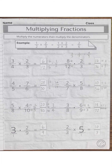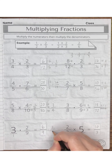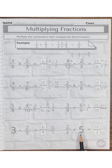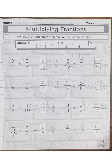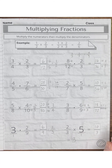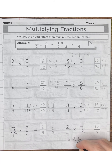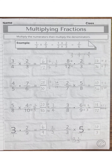Six-ninths reduces to two-thirds, as before. For our final one, we have an improper fraction. Improper fractions can be converted into a mixed number by dividing the numerator by the denominator. 3 can go into 10 three times; the remainder is 1, which becomes the numerator, and the denominator stays the same. For more information about converting improper fractions to mixed fractions, please see that video.